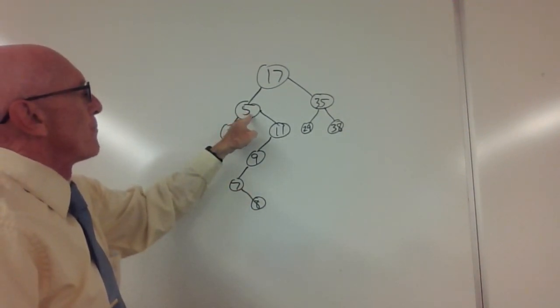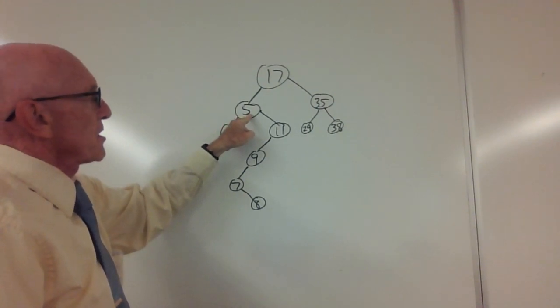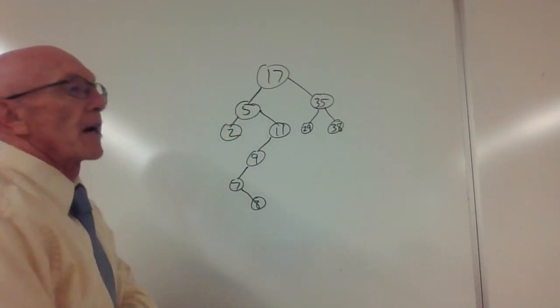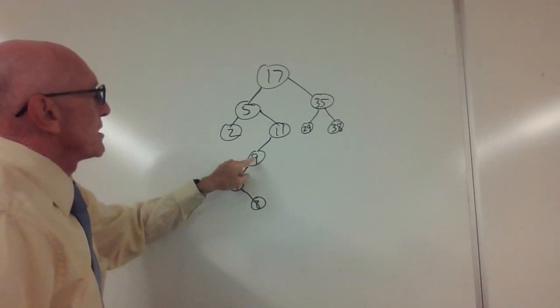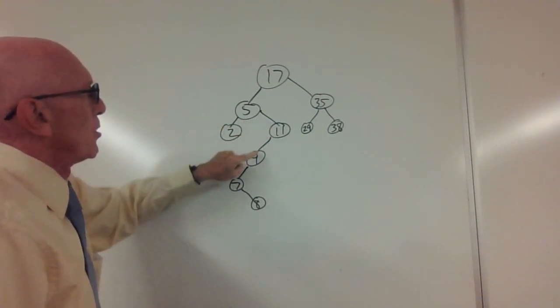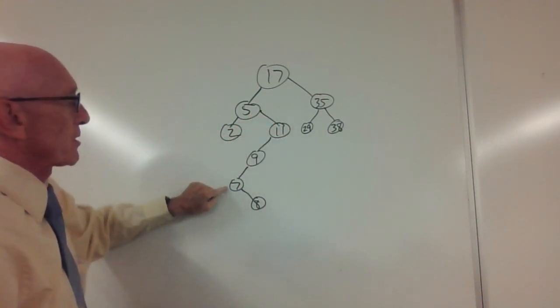I want to remove the 5. That means the successor node is going to go in where 5 does. This means the successor is the smallest item in the right subtree, which is going to be the 7.